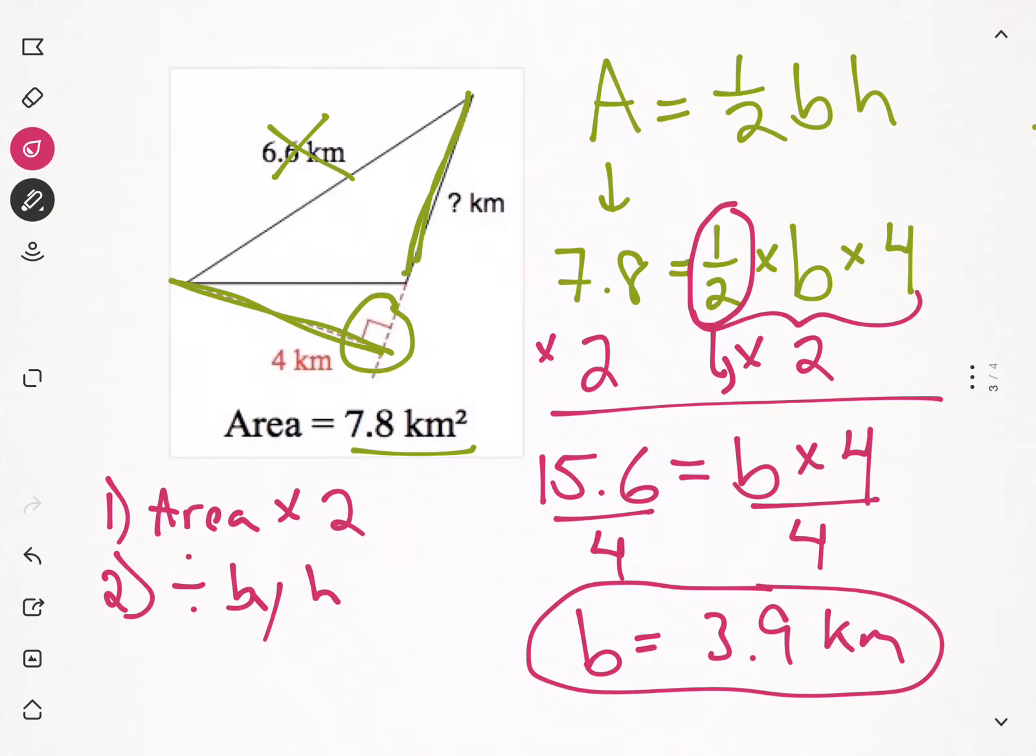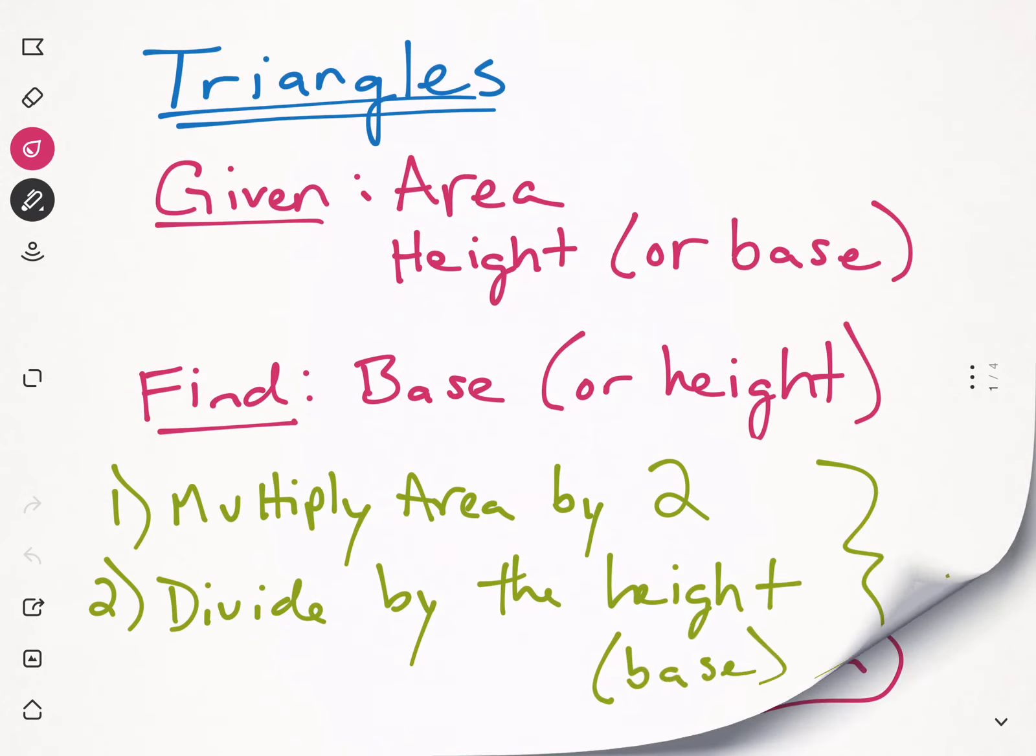So, it all goes back to those steps that I showed you on the first page. Multiply the area by 2. And then divide by the height. And you'll get the base. Or, multiply the area by 2. And divide by the base. And it will give you the height. That is all for today. Hopefully this makes sense. Please leave any questions in the comments section on Google Classroom. Thank you.